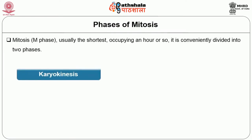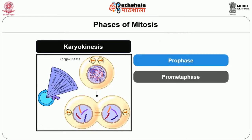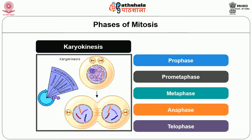The M phase of mitosis, usually the shortest, occupying about an hour, is conveniently divided into two phases: karyokinesis and cytokinesis. Karyokinesis, also called nuclear division, involves the division of the nucleus or chromosomes. Cytokinesis, also called cytoplasmic division, involves the division of the cytoplasm. Karyokinesis is a highly complicated process divided into five phases: prophase, prometaphase, metaphase, anaphase and telophase.